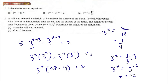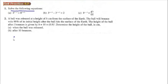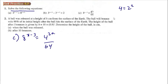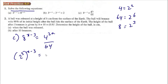For part c: 8^(x-3) = 4^(2x) over 64. We convert to base 2: 4 is 2^2, 64 is 2^6, and 8 is 2^3. So we have 2^(3(x-3)) equals 2^(2 times 2x) over 2^6.